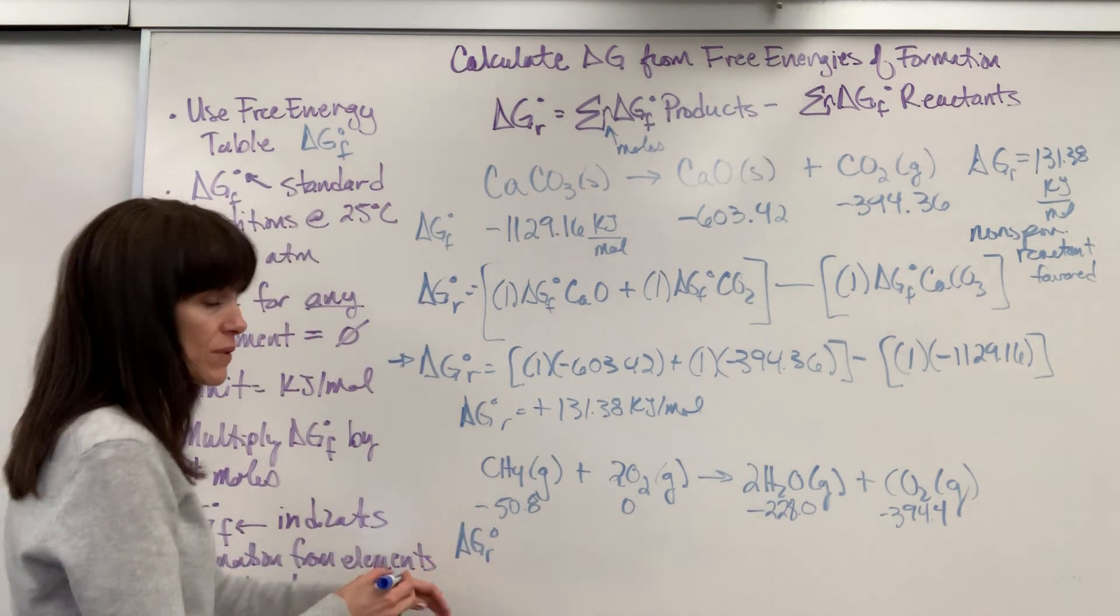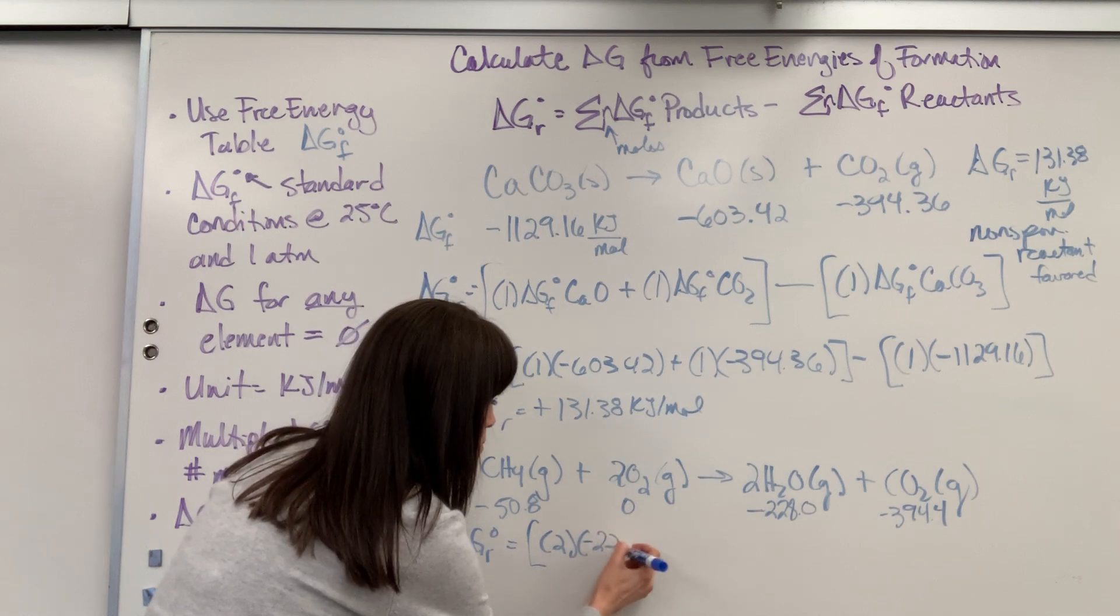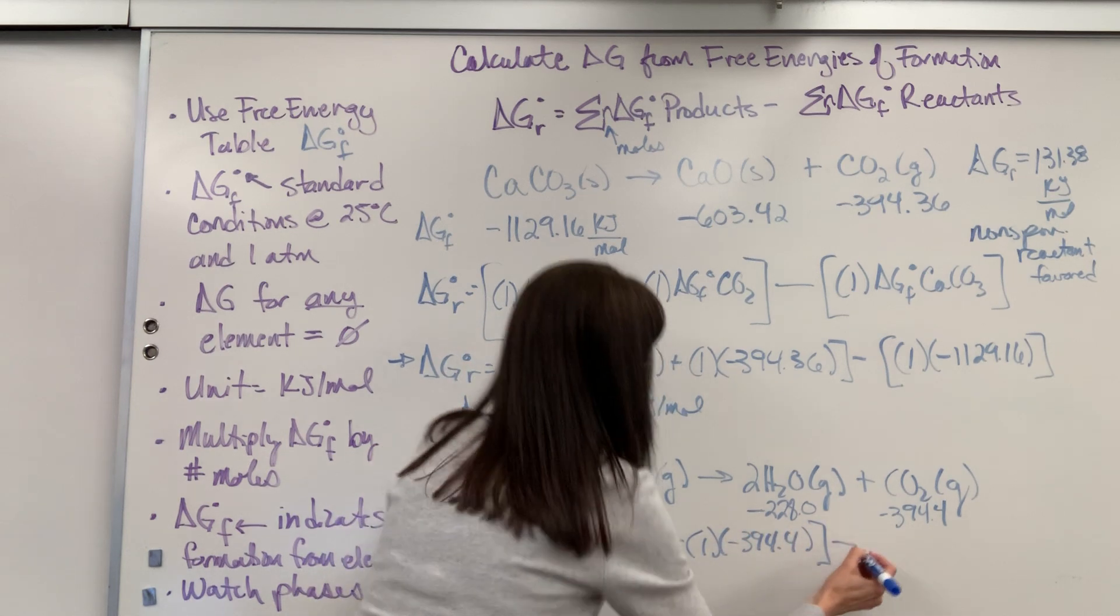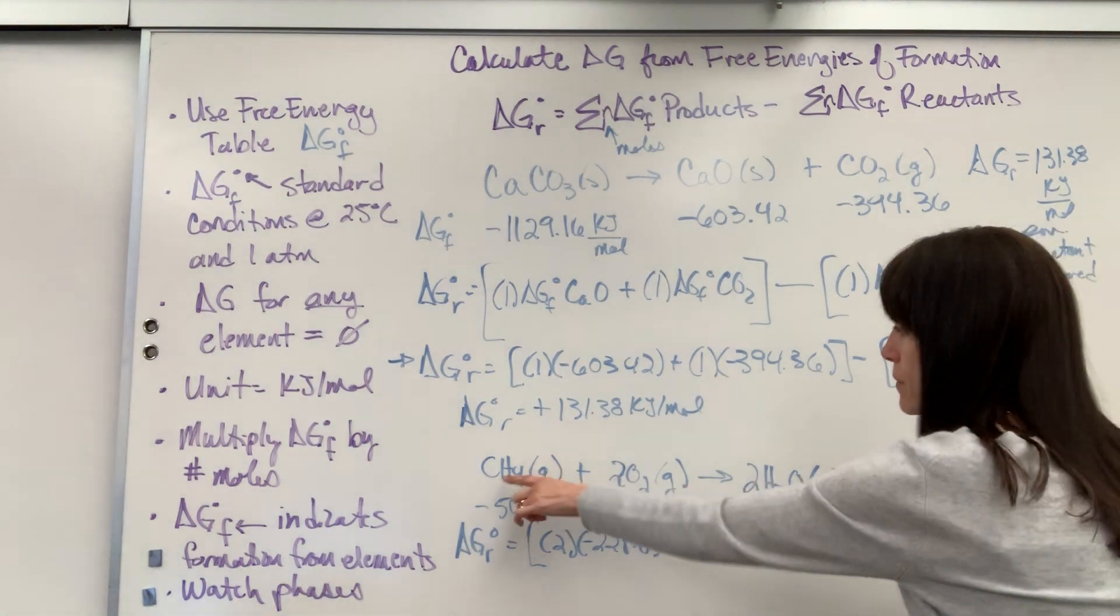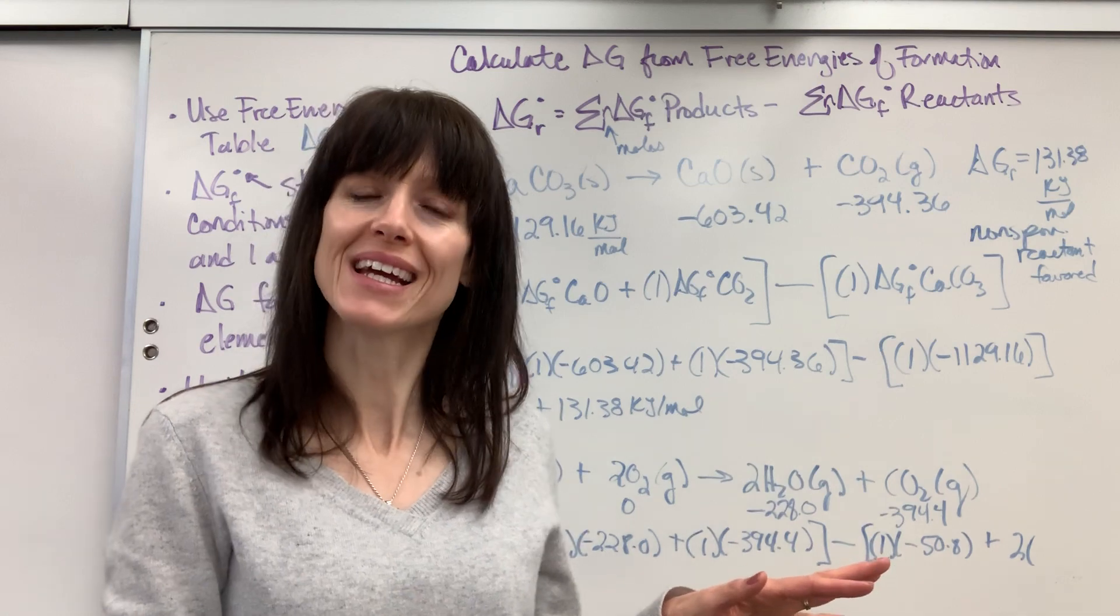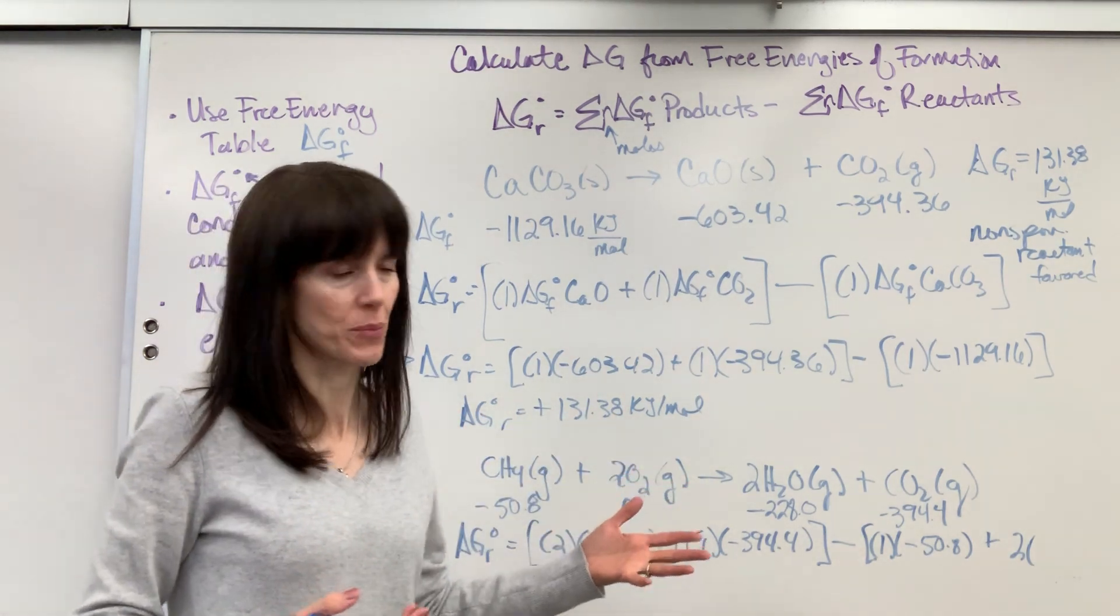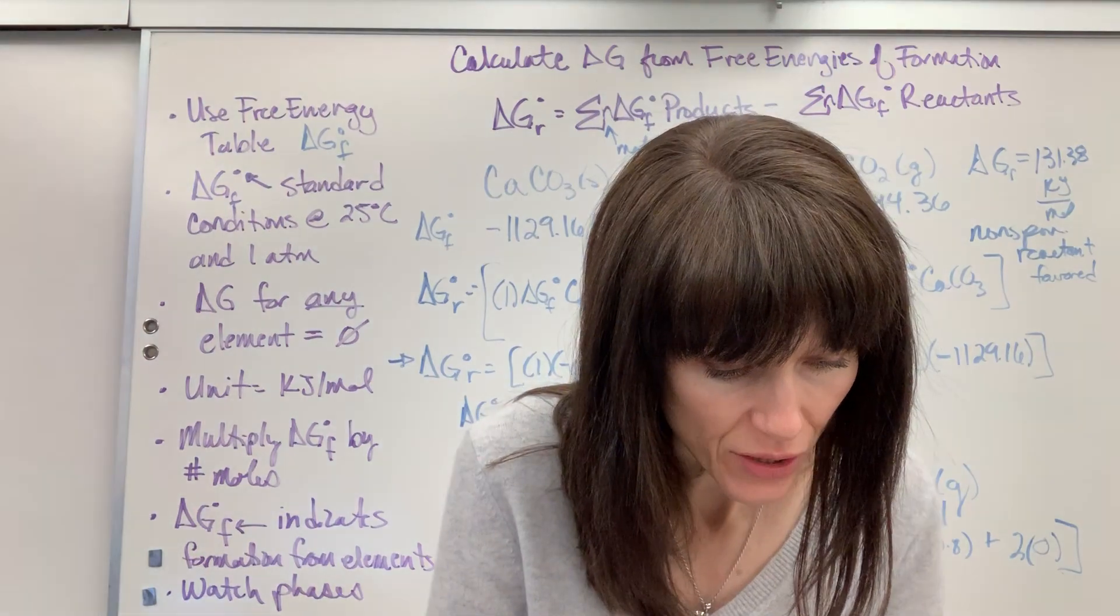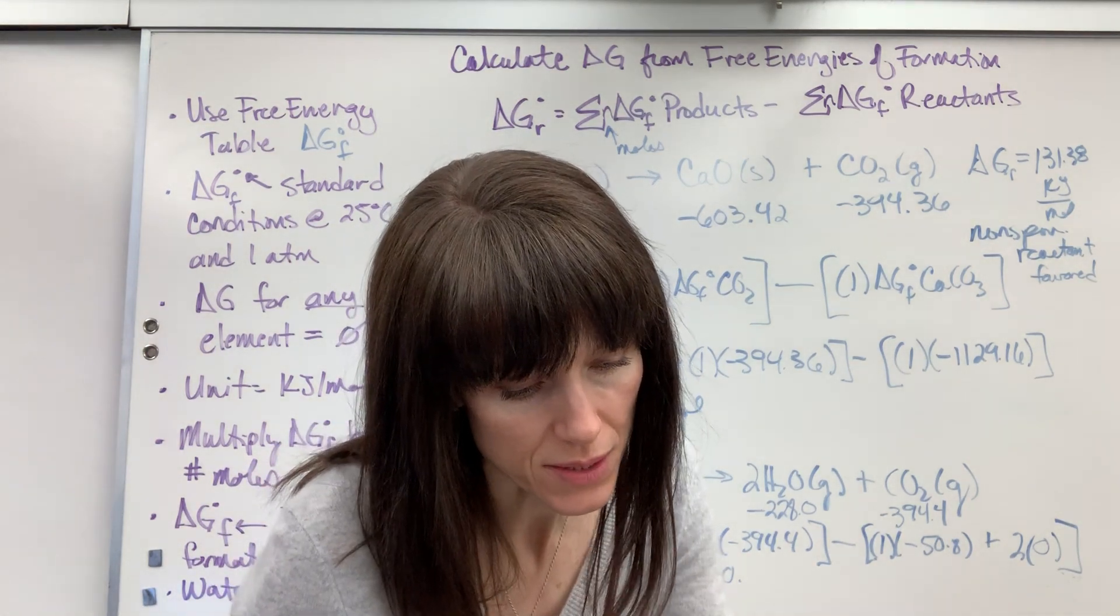The delta G for the reaction is going to be products. So I've got two moles of my water, which is negative 228.0, plus one mole times negative 394.4, minus, now I'm going to do my reactants. It's going to be one mole times the negative 50.8, that's from the methane, plus two moles. And show this. Even though it's zero, show it. So that when it's being graded, the grader knows they understand that anything that's an element is zero. Still write it out, because it's showing traceability, you understand the process. Two times zero. There we go. And then you just plug all that into your calculator. And our final answer is negative. So delta G for reaction is negative 800 point, sorry, 0.8.